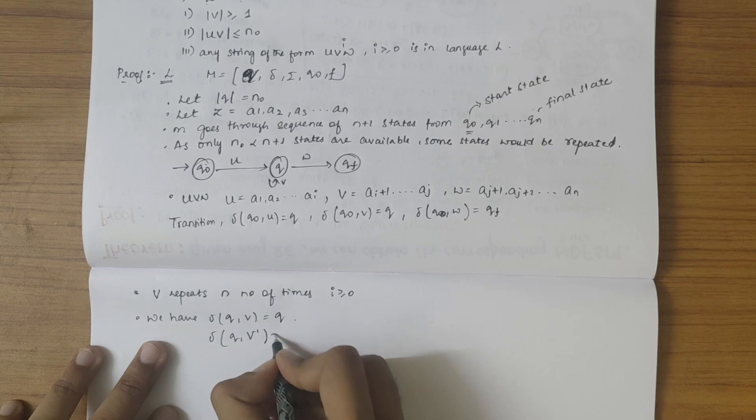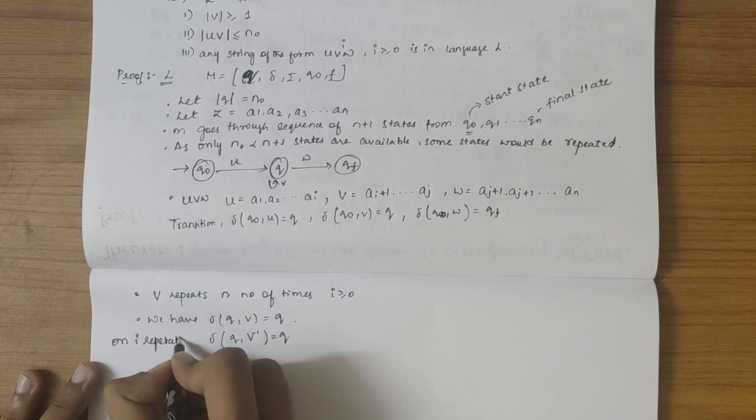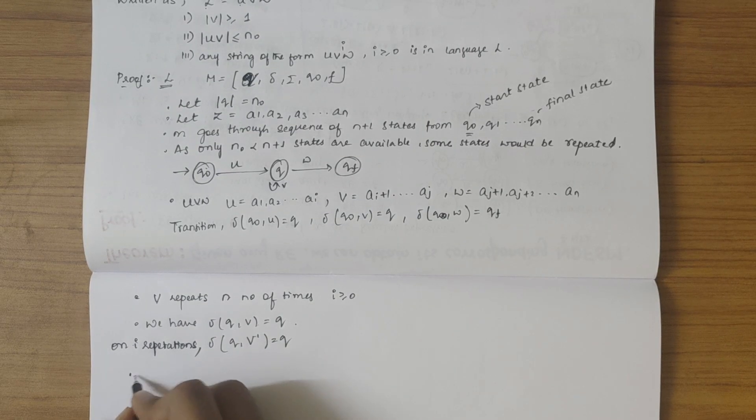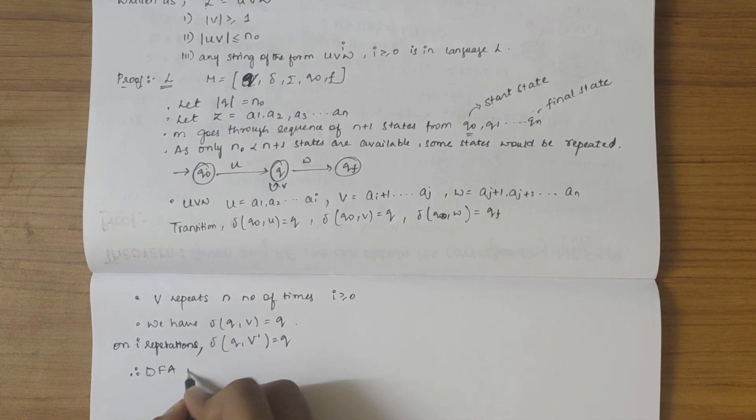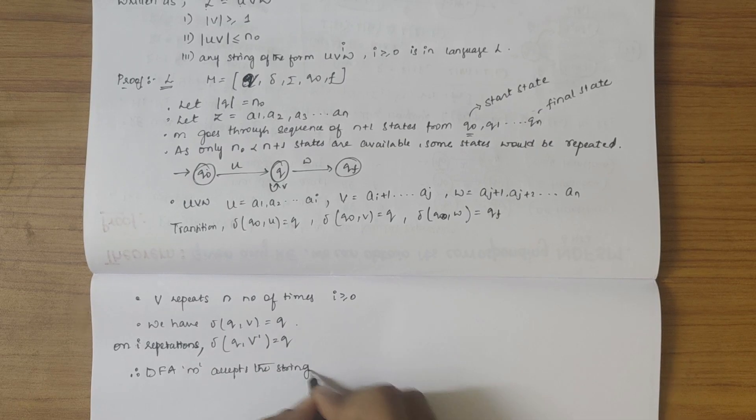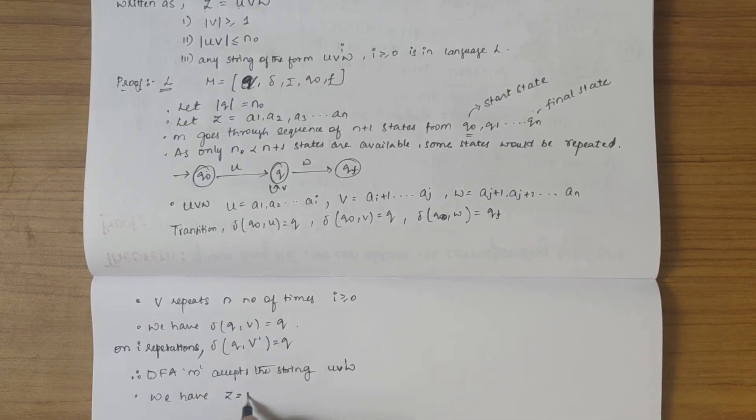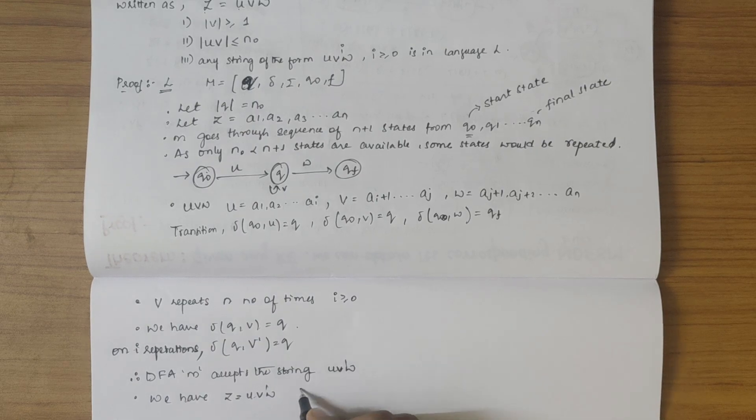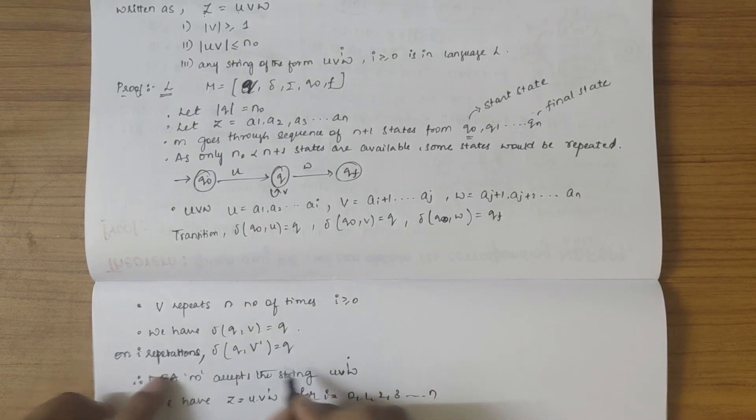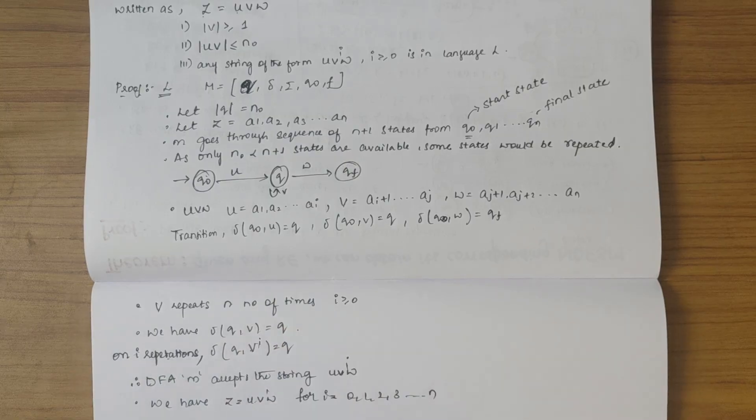On i repetitions we can write transition of q on v power i gives q itself. Therefore the DFA accepts the string u v power i w. So here we have z equals u v power i w, for i is equal to 0, 1, 2, 3 till n. So when i is equal to 0 we get z is u w, and when i is equal to 1 we get z is u v w.